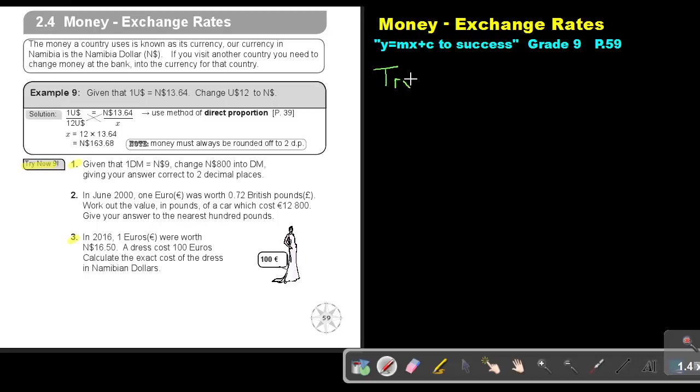Okay, try now 9. Number 1: Given that 1 Deutschmark is equal to 9 Namibian dollar, change 800 Namibian dollar into Deutschmark. Give your answer correct to two decimal places.